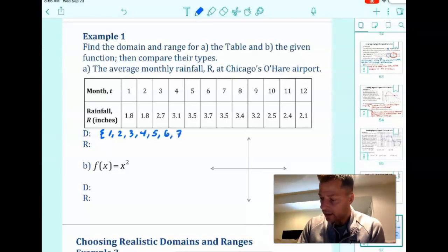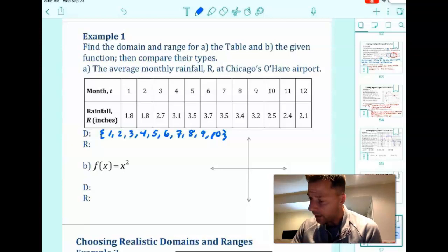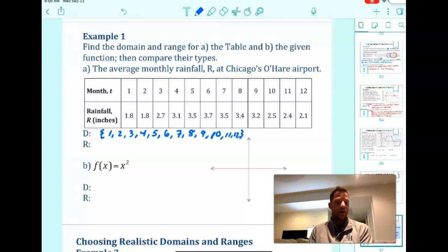1, 2, 3, 4, 5, 6, 7, 8, 9, and 10. Oh, and I forgot 11 and 12. I just wanted to stop at 10, right? 11 and 12. That's the possible set, 1 through 12.